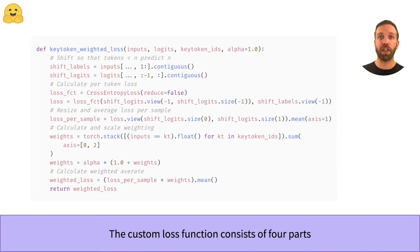Here you see a loss function that does exactly that for causal language modeling. It takes the model's input and predicted logits as well as the key tokens as input.